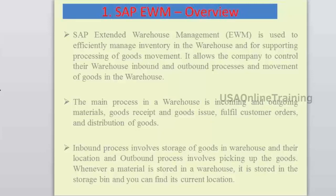If the stock is not WM- or EWM-managed, whenever you receive products you just dump them somewhere in a storage location — all products stored in one place regardless of whether they're raw materials, consumables, or semi-finished goods. When you want to deliver to production or a customer it takes a lot of time because the physical address of the product is not known.